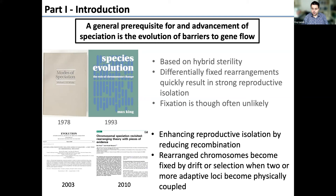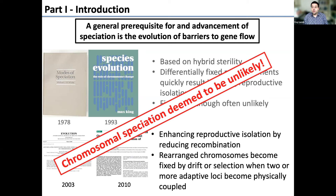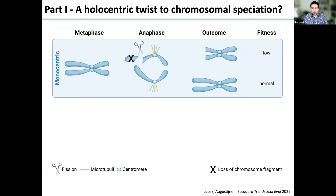Chromosomal speciation is still deemed unlikely, and what we suggest is that people have thought about it with monocentric chromosomes in mind. Monocentric chromosomes — like ours — have a centromeric region where the microtubule binds during cell division. If you have a fission event where part of the chromosome is cut off, the part no longer attached to a centromere is likely lost during cell division, so this outcome has low fitness.